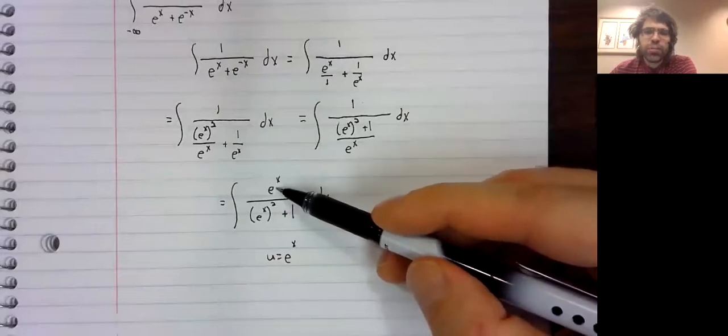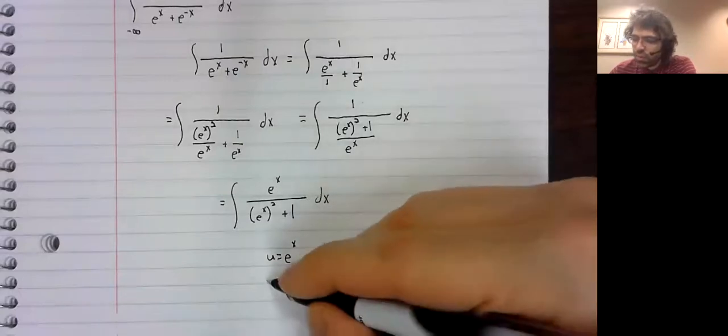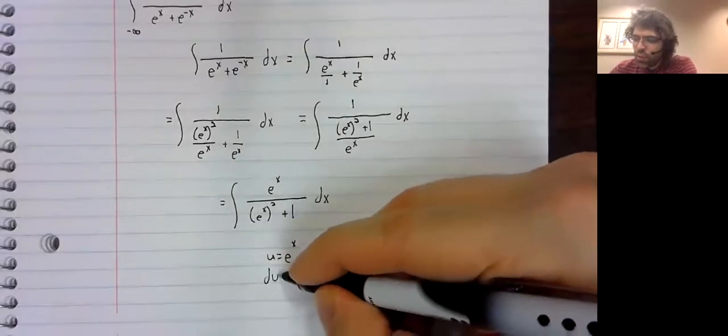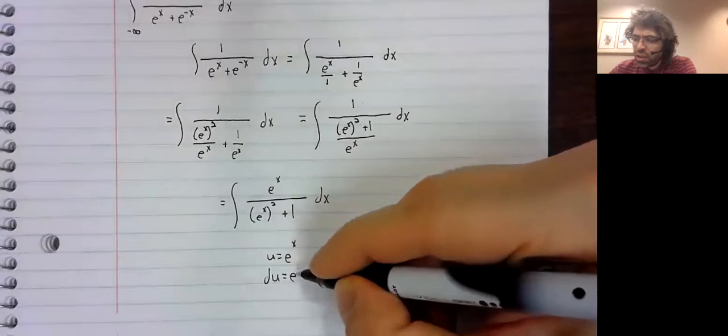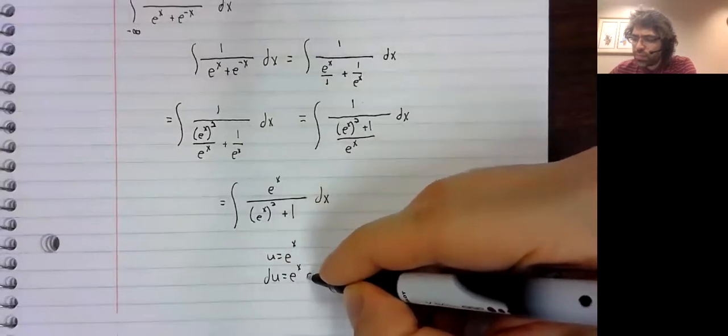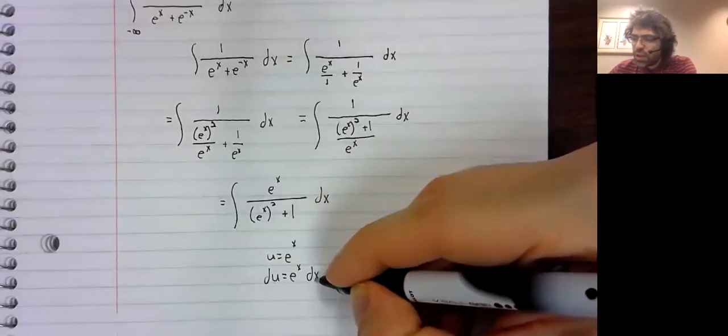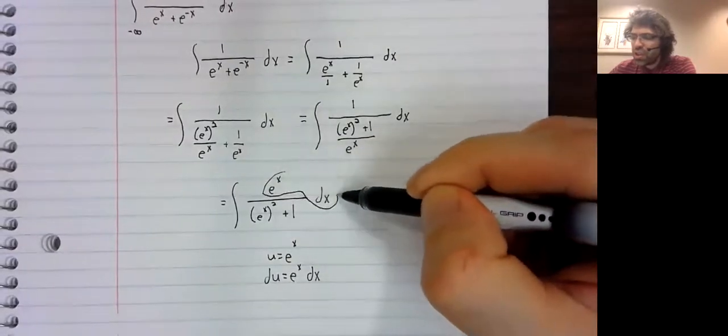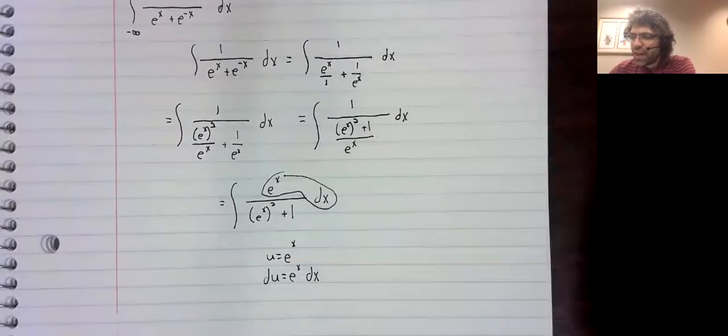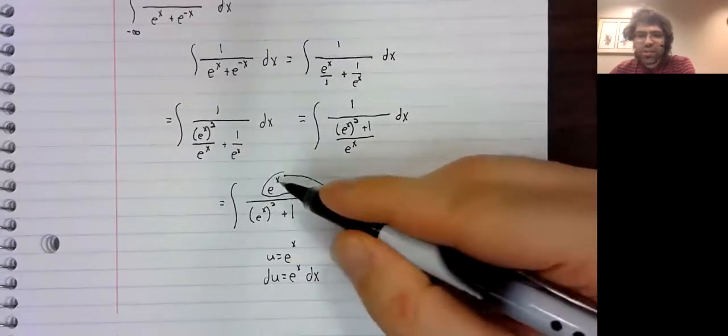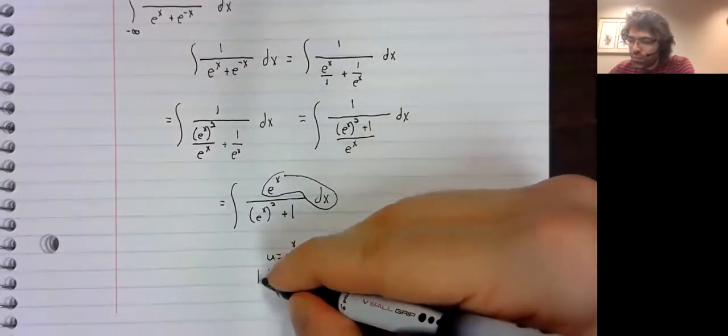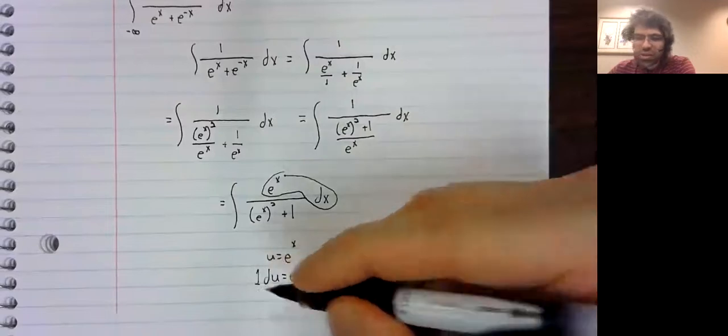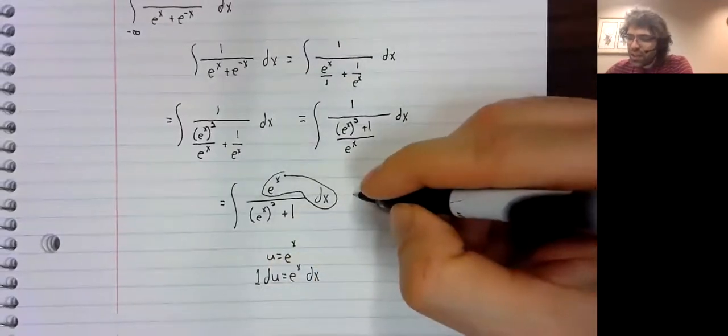For an arc tangent, we need a one up here. Well, fortunately, that is precisely what we get. This is du, which of course is one du.